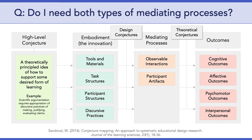The next question asks: do I need both types of mediating processes — observable interactions and participant artifacts? The answer is not necessarily. It really depends on your intervention and what you're asking your participants to do. If they produce something, you will want to look at the artifacts they produce. If they don't produce anything, then you will only be able to observe and analyze the interactions. Keep in mind that interactions is a broad term — there may be learner-to-learner, learner-to-instructor, learner-to-content, as well as learner-to-system interactions. It all depends on the design of your intervention.